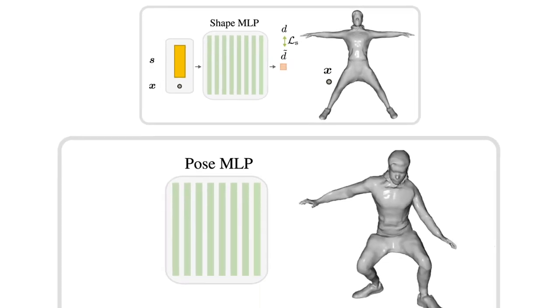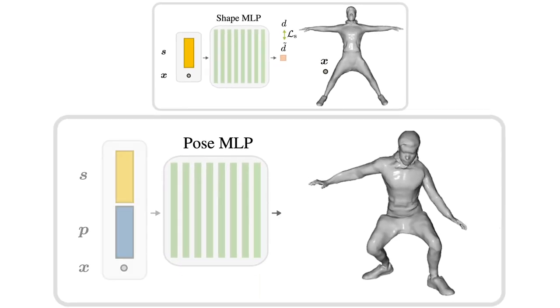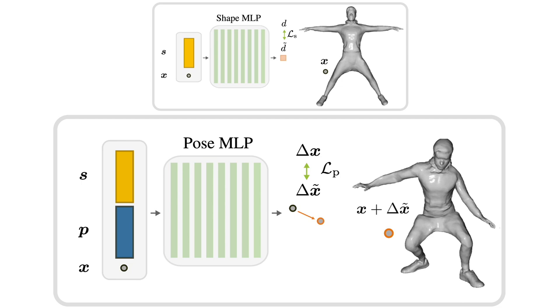The latent pose space is conditional on both the identity shape code and a pose code P, and learns a mapping from points around identities in their canonical pose to the corresponding point locations in the deformed pose.